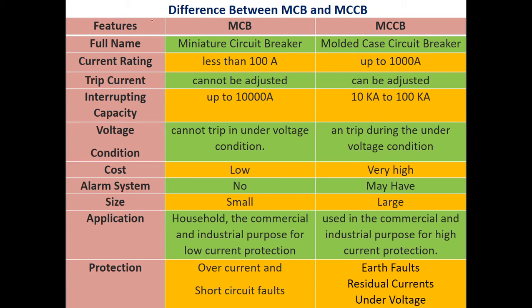On the basis of these features tabulated here, we will discuss the differences between MCB and MCCB. The full name of MCB is miniature circuit breaker, whereas MCCB stands for molded case circuit breaker. Regarding current rating, MCB is a low current rating device, of order less than 100 amperes, whereas MCCB is a high current rating device, rated up to 1000 amperes.